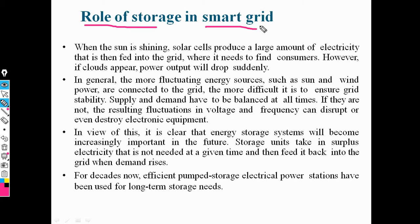We need to store electricity in the form of batteries. For example, when using a solar cell, the solar cell converts sunlight into electrical energy. This electrical energy is stored in the form of DC charge in batteries. That means a solar cell produces a large amount of electricity.